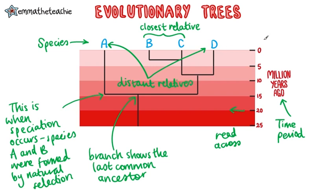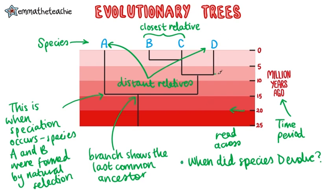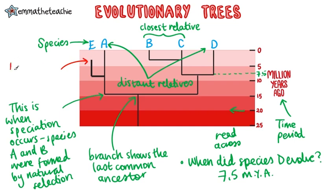You can be asked to collect data from evolutionary trees. For example, when did species D evolve? Just find the species on the diagram, read down until the branch splits and across, and you'll get your answer — species D evolved about 7.5 million years ago. If there is a species whose line doesn't reach up to the top or to the zero million years mark, like species E, then this shows us that that species went extinct. In the case of species E, we can read across and work out that it went extinct 2.5 million years ago.